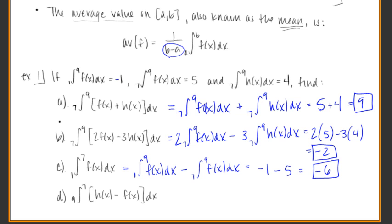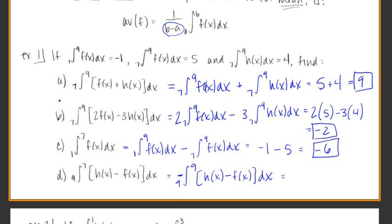For the integral from 9 to 7, all our known integrals are from 7 to 9, not 9 to 7. So swapping the bounds, this is the same as the integral from 7 to 9 of h minus f dx, with a minus sign out front. That gives negative 4 plus 5, for a grand total of 1.